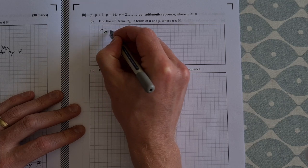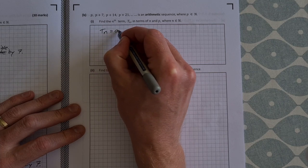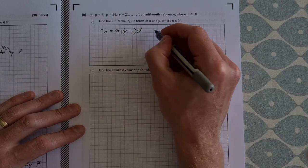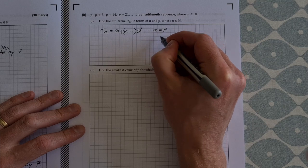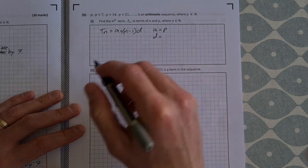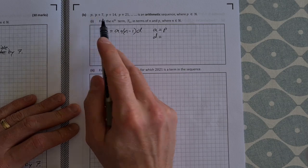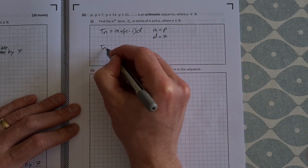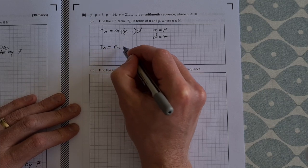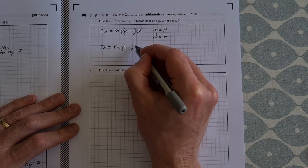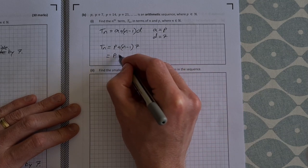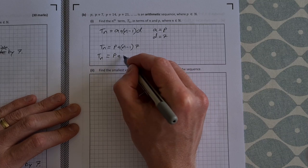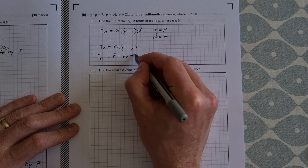For this, all you need to do is use your t of n formula. t of n is equal to a plus n minus 1 times d. And a is your first term, so a is equal to p, and d is equal to your common difference. So the common difference is you're just adding 7 each time, so d is equal to 7. So that means t of n is equal to p plus n minus 1 times 7. And then just multiply it out, t of n is equal to p plus 7n minus 7.